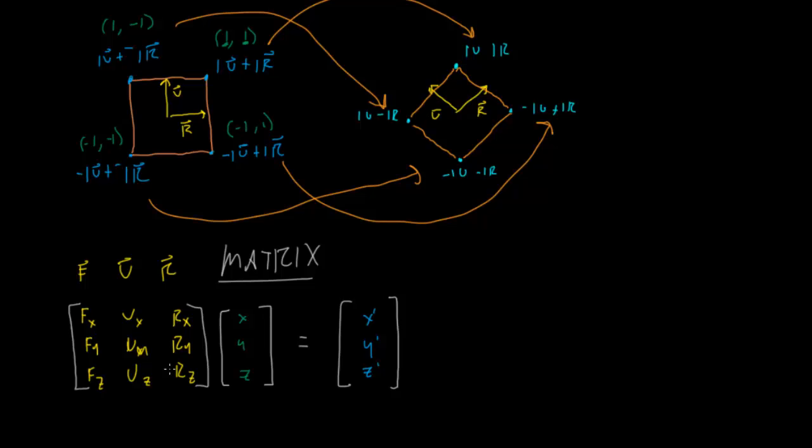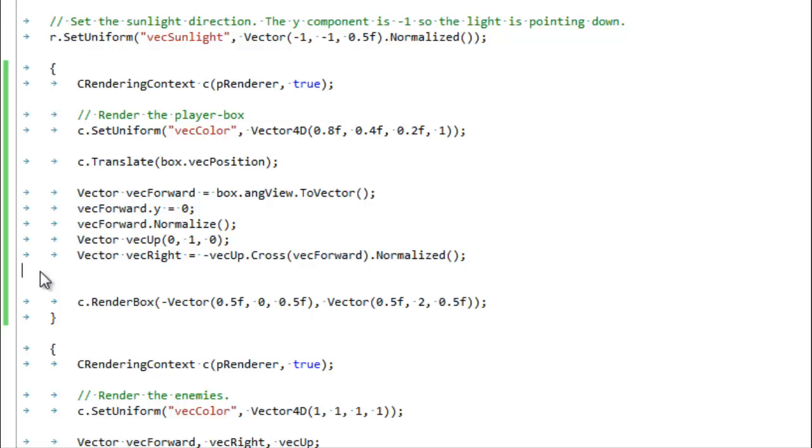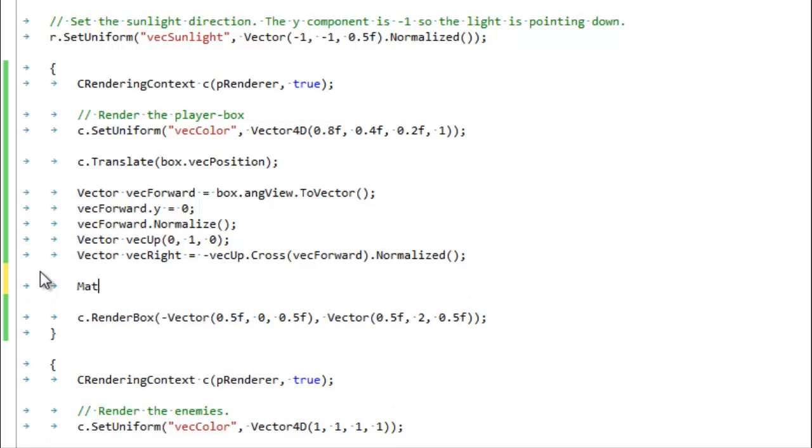So we're going to go to the code now and see how that works. Alright, this is going to be the shortest code section yet. This is the part of the code where we render the player. Now we set the color of the player and then we set the position of the player right here. And then this big block, we have all of the math that's required to make our basis vectors for what direction the player should face. I'm not going to go over this because we did exactly this in two or three previous videos.